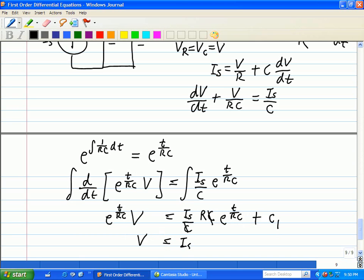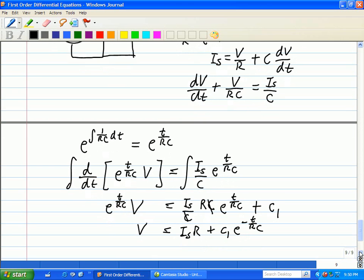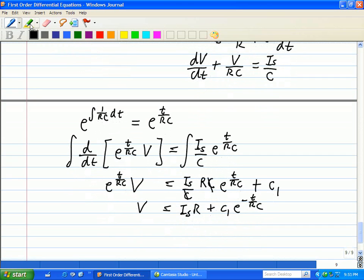So we see that C is canceling here. We divide E to the T over RC on both sides. That leaves V on the left, and on the right side is just ISR plus C1 E to the minus T over RC. This is our general solution to this differential equation.